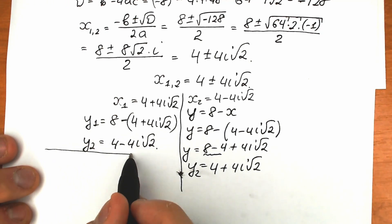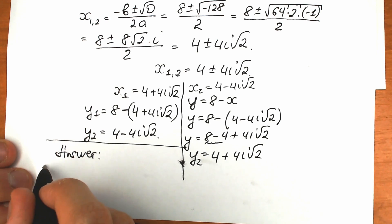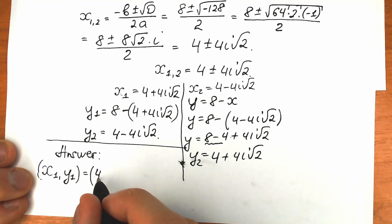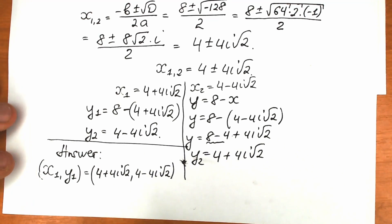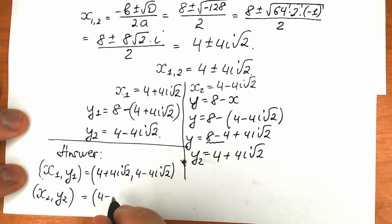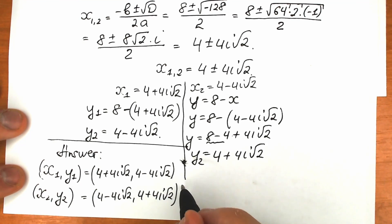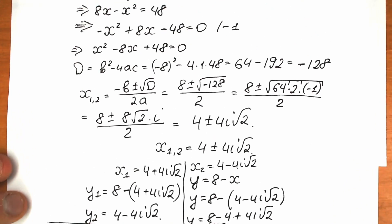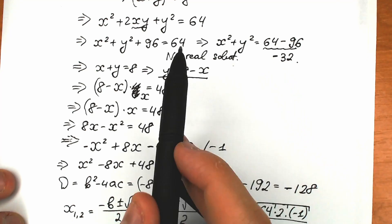Let's write our final answer as pairs of solutions. The first pair: (x₁, y₁) equals (4 plus 4i√2, 4 minus 4i√2). The second pair: (x₂, y₂) equals (4 minus 4i√2, 4 plus 4i√2). These are complex solution pairs. In the beginning we proved there are no real solutions because the sum of two squares can never equal a negative value.